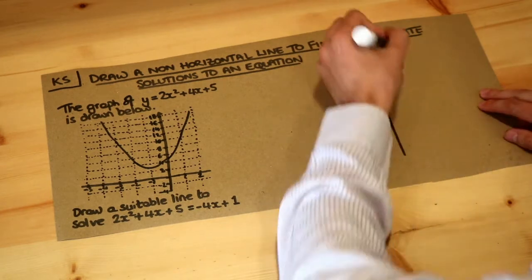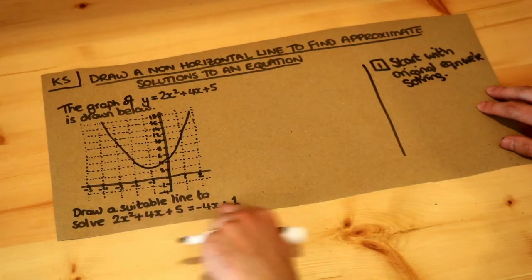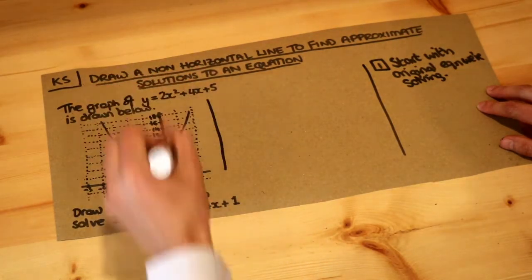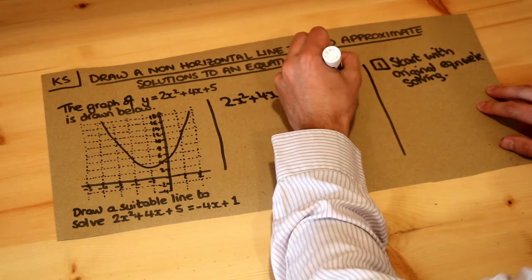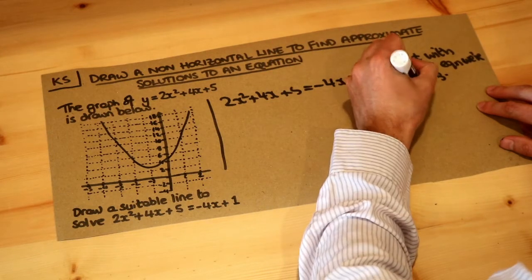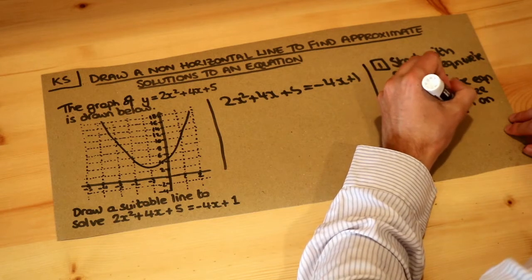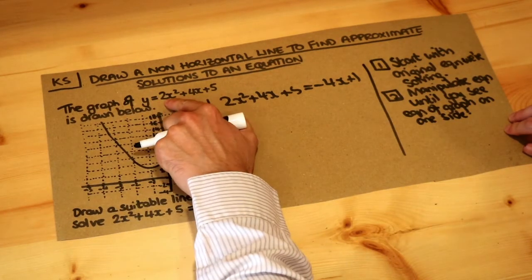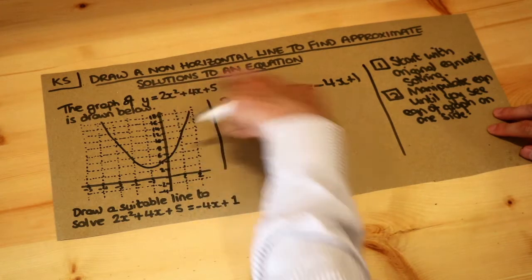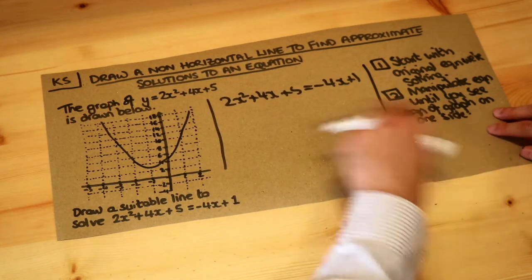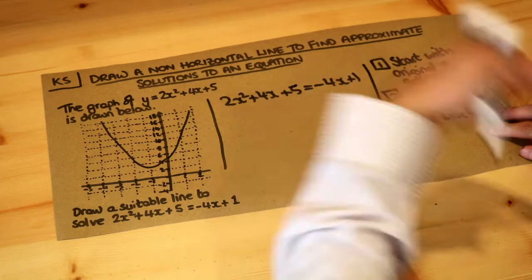I showed you the general steps in the previous video. Step 1: start with the original equation we're solving, 2x squared plus 4x plus 5 equals minus 4x plus 1. Step 2: manipulate the equation until you see the equation of the graph on one side. We've got a graph sketch here of y equals 2x squared plus 4x plus 5, so we need to manipulate this equation until we see this expression on one side. Well, we already have 2x squared plus 4x plus 5 on one side, so we don't need to do step 2. But in a subsequent video we'll look at problems where you do need to manipulate both sides.